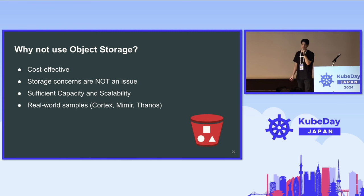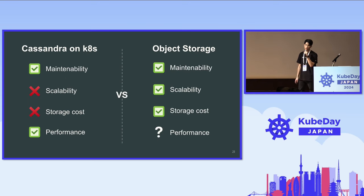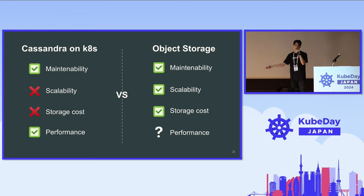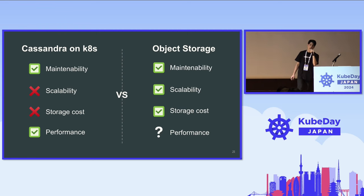There are real-world battle-tested examples like Cortex, Mimir, and Thanos — open source products dealing with time series data and metrics whose backend storage is object storage. That's why we believe we can attain this kind of architecture on top of object storage. Migrating Cassandra into Kubernetes doesn't solve data cost or scalability issues, so that's why we went with object storage.